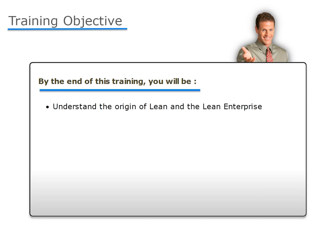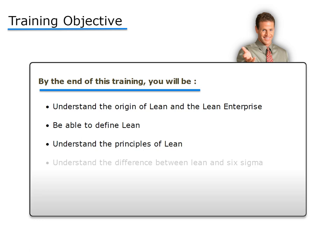By the end of this training, you will be able to understand the origin of lean and the lean enterprise, define lean and understand the principles of lean which form the basic foundation for the methodology, and finally, you will be able to understand the difference between lean and six sigma.